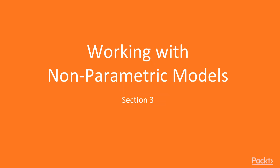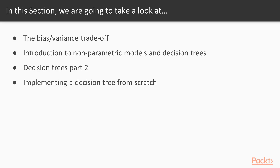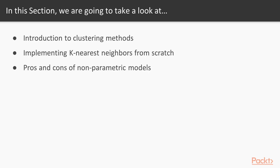In the last section, we introduced parametric models and looked at how to implement linear and logistic regression. In this section, we're going to cover the nonparametric model family. We'll start by covering the bias-variance trade-off and explaining how parametric and nonparametric models differ at a fundamental level, and then we'll get into decision trees and clustering methods.